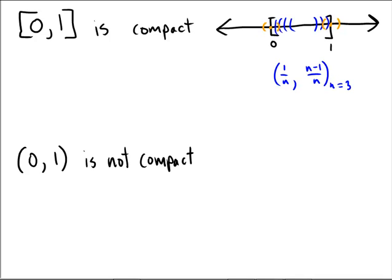So this closed interval from 0 to 1 is not a proof, but this is kind of an understanding of what's going on in a compact set, and essentially why it needs to be closed and bounded.